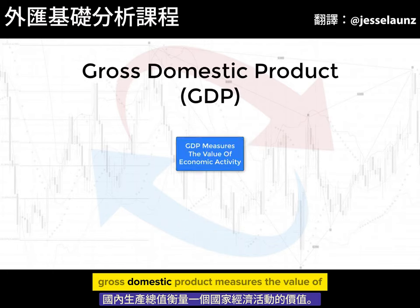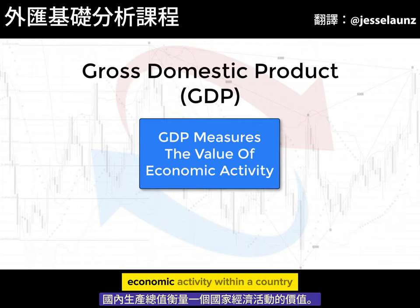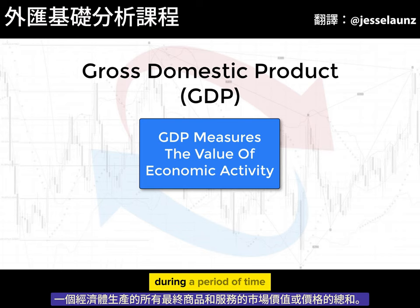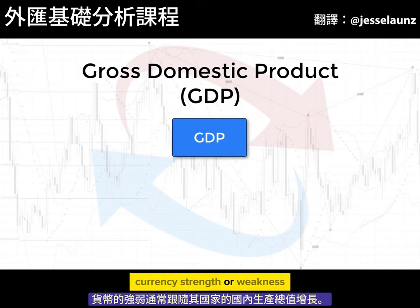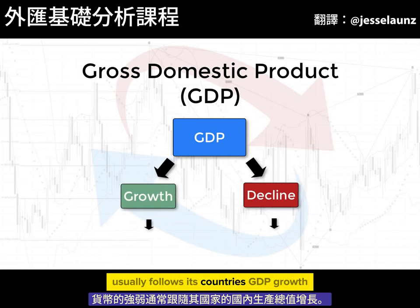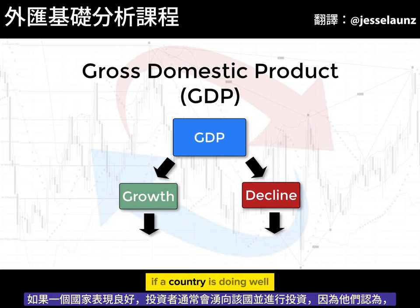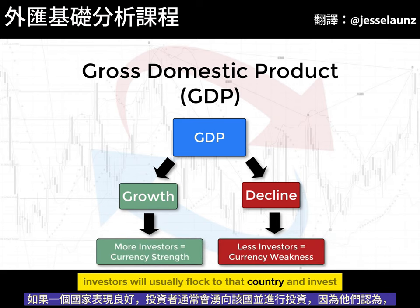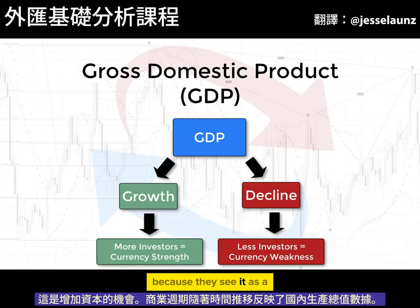Gross domestic product measures the value of economic activity within a country. GDP is the sum of the market values or prices of all final goods and services produced in an economy during a period of time. Currency strength or weakness usually follows its country's GDP growth. If a country is doing well, investors will usually flock to that country and invest because they see it as an opportunity to grow their capital.